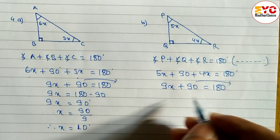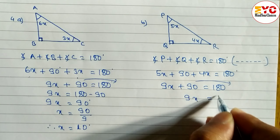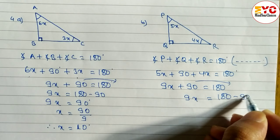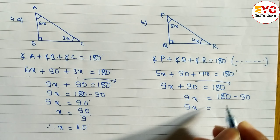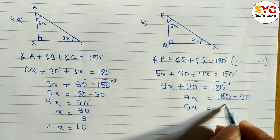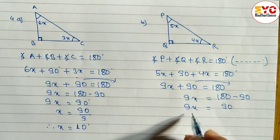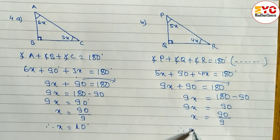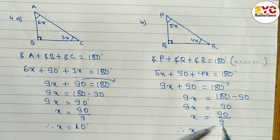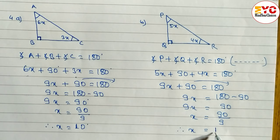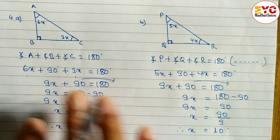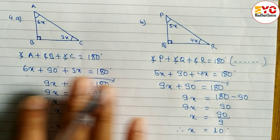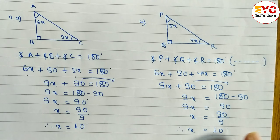So we take 90 to the right side and write 9x is equal to 180 minus 90. When you subtract you get 90, so 9x equals 90. Since 9 is in multiplication, we divide: x is equal to 90 divided by 9, and when you divide you get x is equal to 10 degrees. So the value of x is equal to 10.